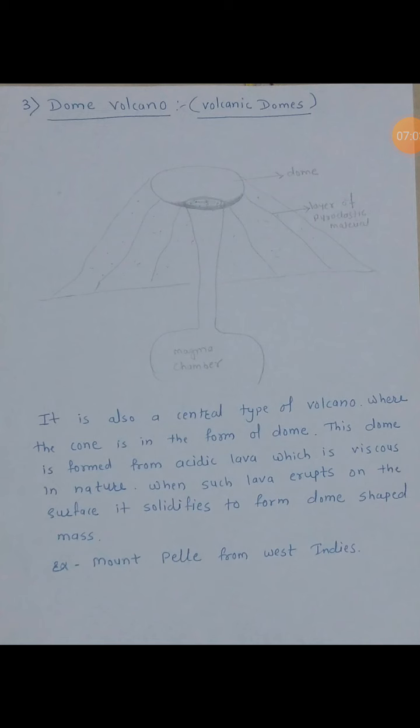So we will see the third type of volcano — that is a dome volcano, or volcanic domes. Tachhi diagram dhe lela hai. Magma chamber paasun connected pipe dhe lela hai, tachha nantar crater dhe lela hai. Ita crater mothya pramada baghaela milte — tala tach domes samantle dato. Aani tachya madhe layer of pyroclastic material cha kai slide la layers dhe lela hai. It is also a central type of volcano — central type of volcano ahe, where the cone is in the form of a dome. Dome means hill-like structure, small hillock.